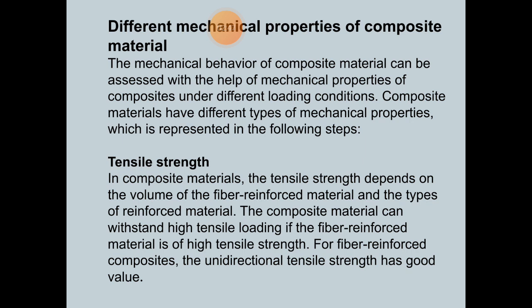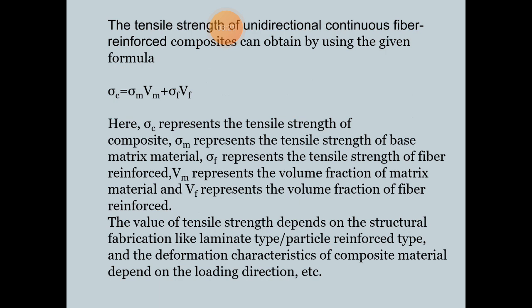Number one is tensile strength. In composite materials, the tensile strength depends on the volume of the fiber-reinforced material and the types of reinforcement. Composite materials can withstand high tensile loading if the fiber-reinforced material has high tensile strength. For fiber-reinforced composites, the unidirectional tensile strength is very good. The tensile strength of unidirectional continuous fiber-reinforced composites can be obtained using the formula: σc = σm·Vm + σf·Vf.